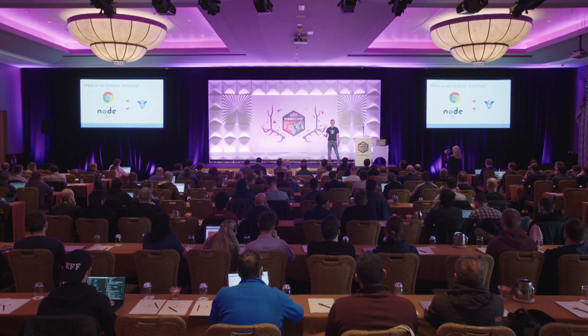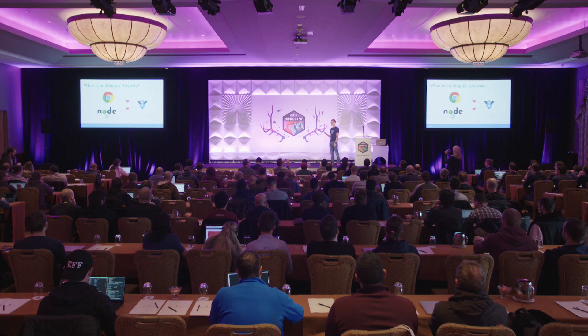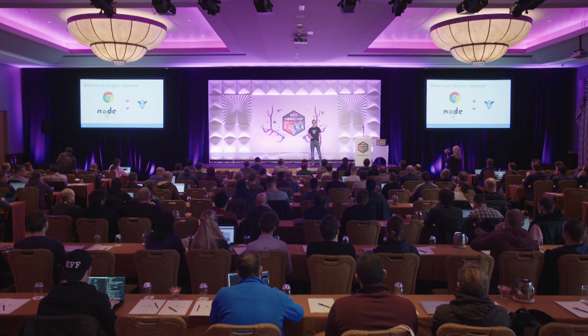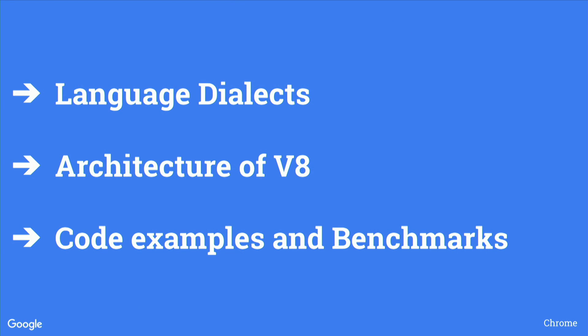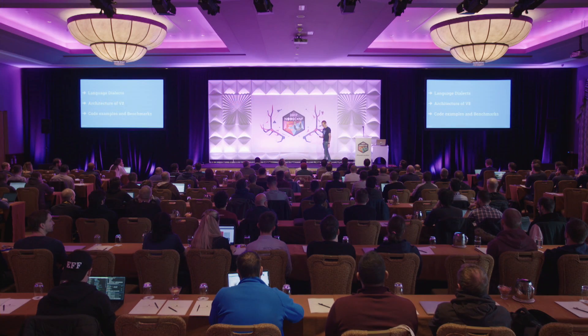What is an engine anyway? V8 is the JavaScript runtime, compiler, or engine within Node.js and within Chrome as well. These are the two biggest embedders of V8. Any time you're running some JavaScript in Node or in Chrome, it's running through V8. The talk is going to be focused around this idea of language dialects, which is interesting when it comes to performance. I'm going to talk about the architecture of V8, give some code examples, look at a few benchmarks, and look at how performance has changed over the last few years.